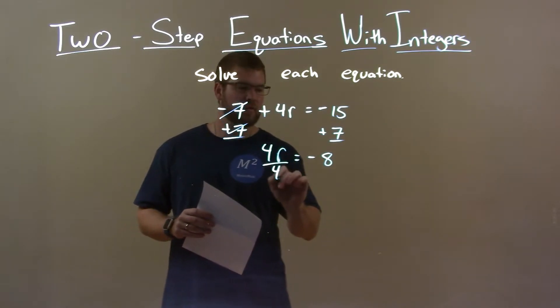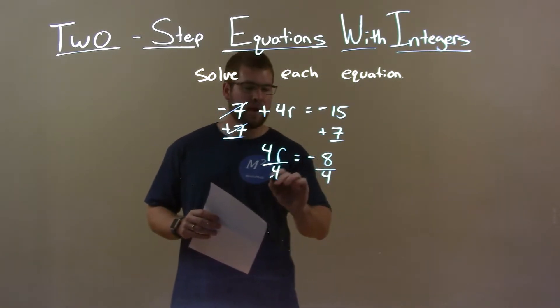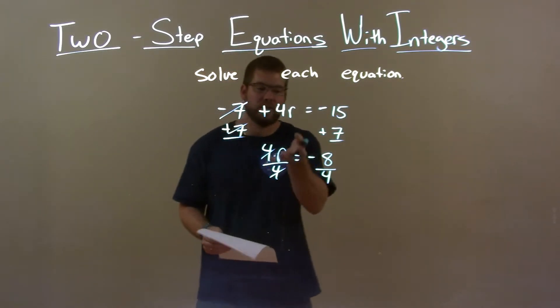Now, we're just dividing by 4 to both sides. That will give us r by itself, because we're multiplying by 4, opposite of multiplication is division.